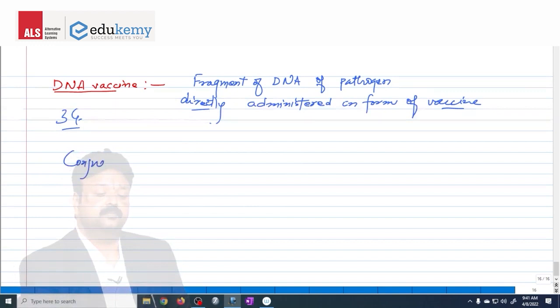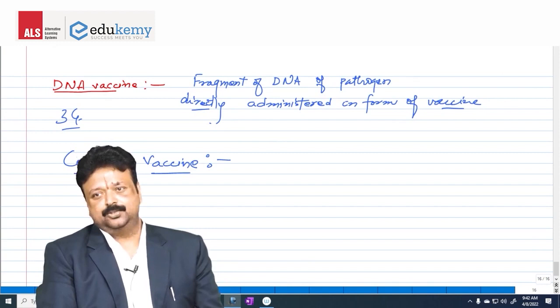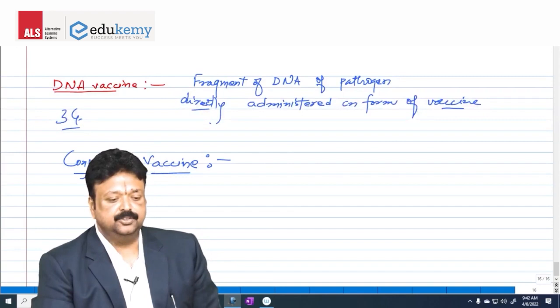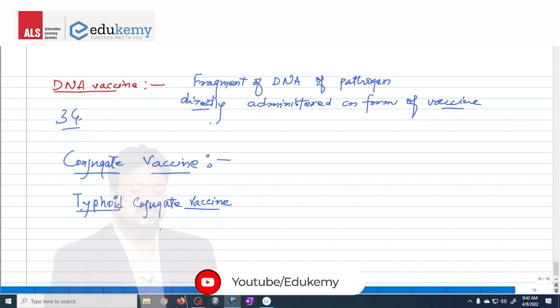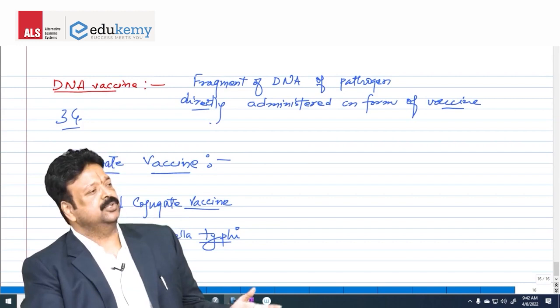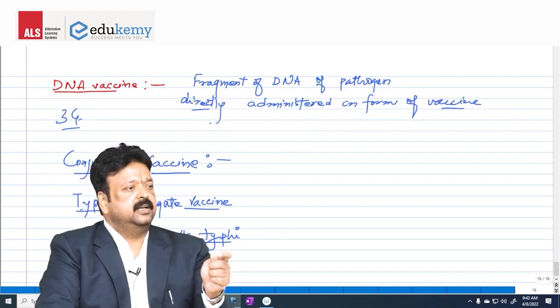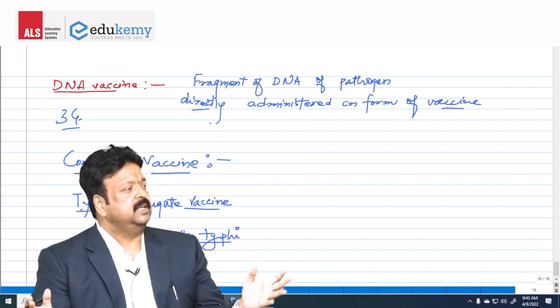And another is conjugate vaccine. The feeble antigen, which is called typhoid. Typhoid causes the bacteria, which is called Salmonella typhi. The antibodies which are created are not going to be strong antibodies. And in other cases also, we need to have booster dose.